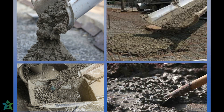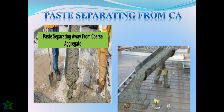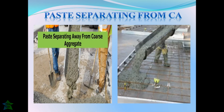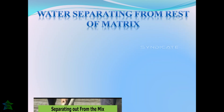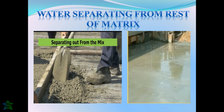From this picture we can see that the cement slurry is separating out from the rest of the material because of its lowest specific gravity. This type of segregation occurs if the concrete mix is too wet, meaning the addition of water in the concrete mix is greater than that specified in the concrete mix design.